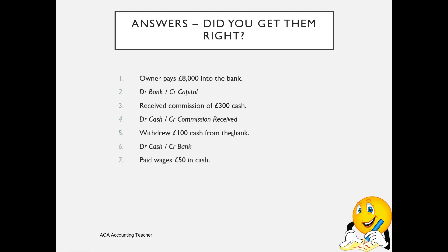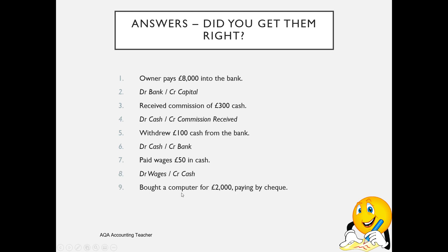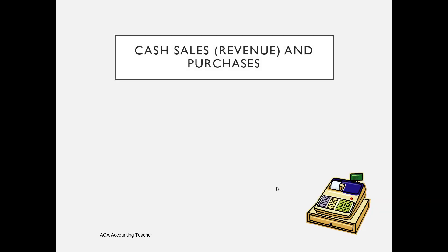Next: paid wages of £50 in cash. We've got to record the expense on the debit side, and we've reduced the cash asset, so we credit cash with £50. The last one: bought a computer for £2,000 paying by cheque — record the asset, so debit the computer account; paid by cheque, so credit the bank account. Debit computer, credit bank. Hopefully if you've watched my previous lessons you got all of those right; if not, go back to lessons two and three.